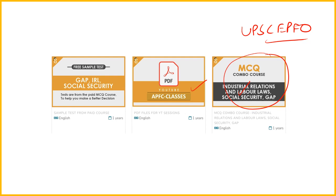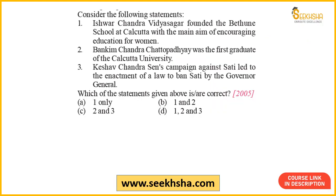Let us start with the first question. Consider the following statements: (1) Ishwar Chandra Vidyasagar founded the Bethune School at Calcutta with the main aim of encouraging education for women. (2) Bankimchandra Chattopadhyay was the first graduate of Calcutta University. (3) Keshav Chandra Sen's campaign against sati led to the enactment of a law to ban sati by the Governor General. Which statement is correct? This question was asked in the 2005 UPSC Civil Services exam.